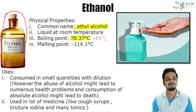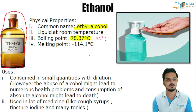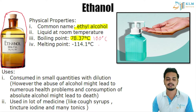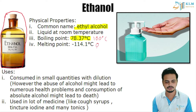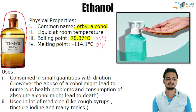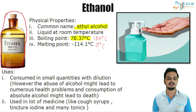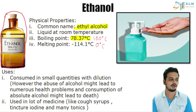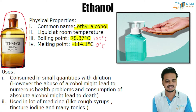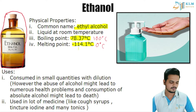The melting point of ethanol is very low — minus 114.1 degrees Celsius. The melting point of water is zero degrees Celsius. You can see that both the melting point and boiling point of ethanol are less than those of water.